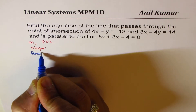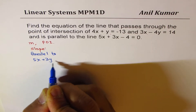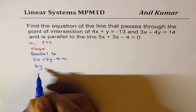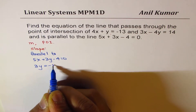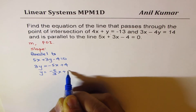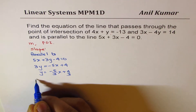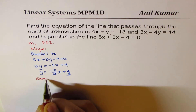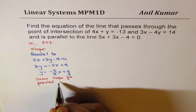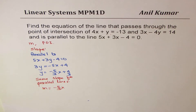When we say the line is parallel, we mean parallel to 5x + 3y - 4 = 0, which means they have the same slope. So let's rearrange this equation into y = mx + b form. We get 3y = -5x + 4, or y = -5/3 x + 4/3. Parallel lines have the same slope, so the slope m = -5/3.